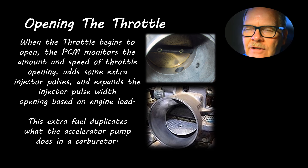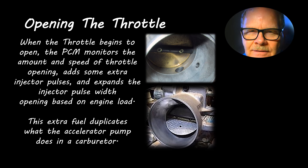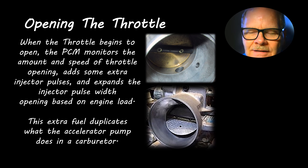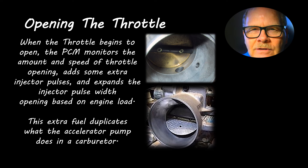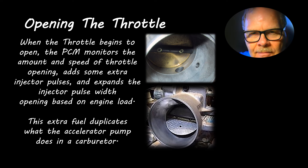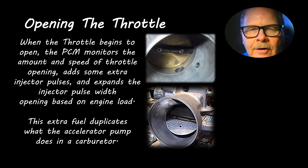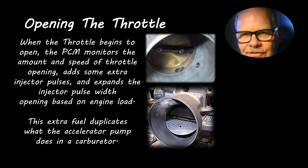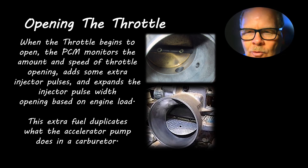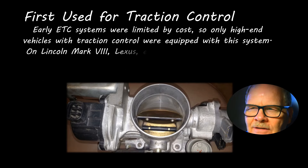I was talking about a van my buddy was working on that was running really rich when you first started it — it had a fuel-injected 5.0 in it. We looked at the data stream on the scan tool and the throttle position sensor, even when you weren't applying the throttle, was moving all over the place and adding extra injector squirts — thinking you were operating the throttle when you weren't. On that old system, all it could look at was the throttle position sensor, and if it's drifting around, that's why it was running rich.